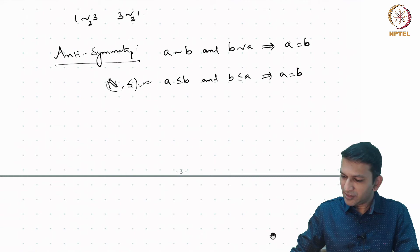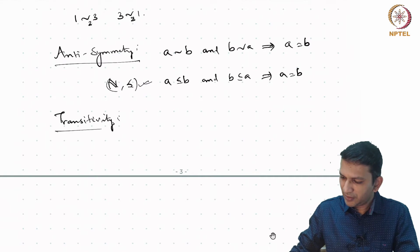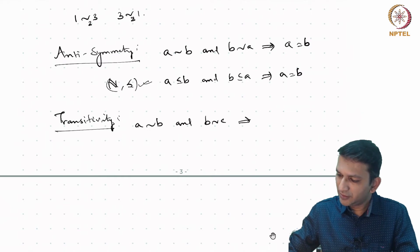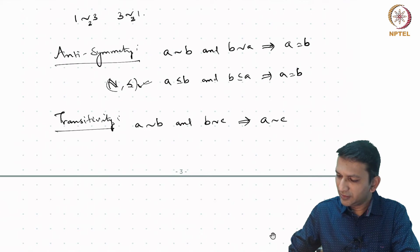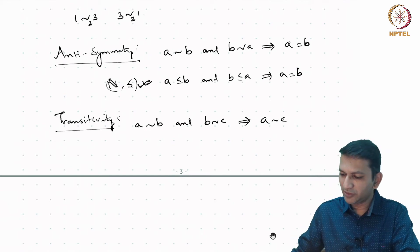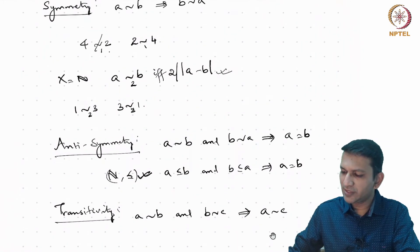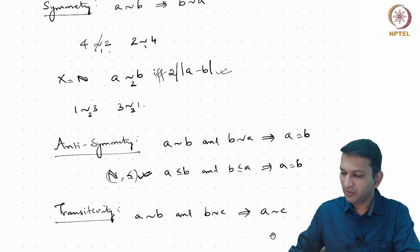What does transitivity say? It says that if a is related to b and b is related to c, we should imply a is related to c. Clearly, the natural ordering on natural numbers has this property, and so does the second relation where 2 divides |a − b|, the binary relation we have defined on the natural number set.